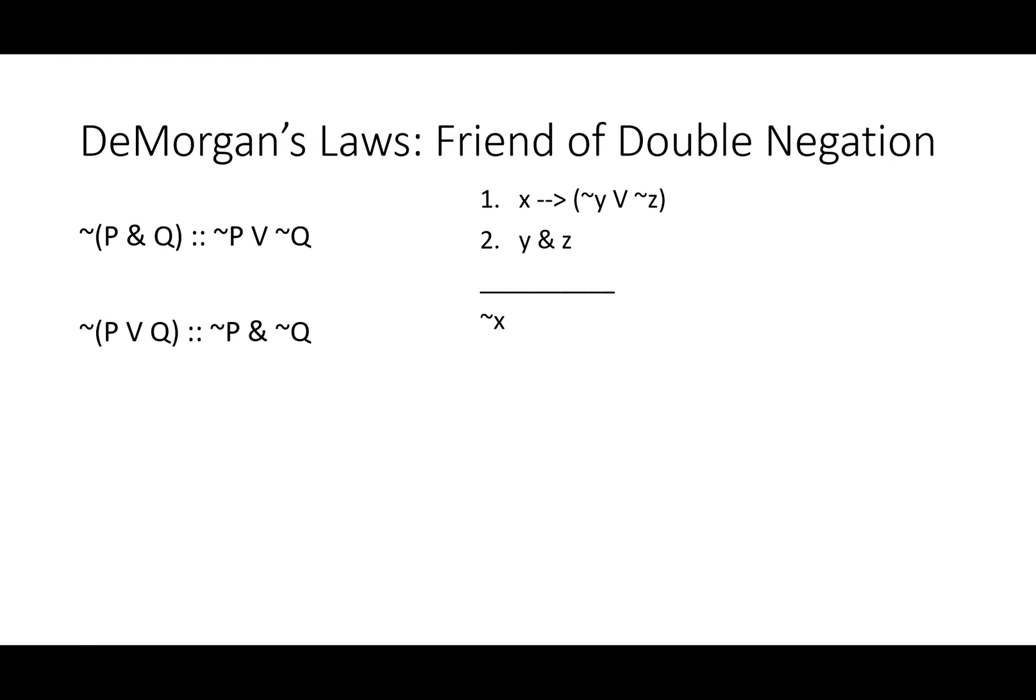As in the last proof, you may find yourself using double negation with DeMorgan's quite frequently. Let's take a look at this one. Line one, if X, then either not Y or not Z. Well, Y and Z, so not X. I hope we see pretty intuitively that Y and Z being true means that either not Y or not Z can't be true.